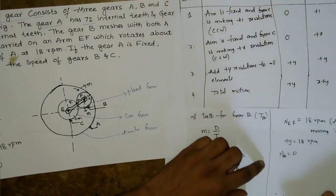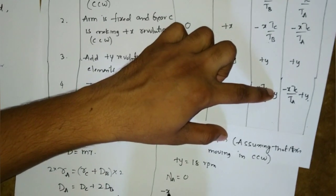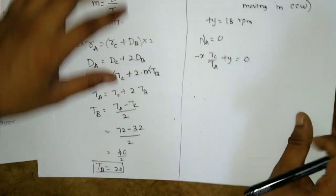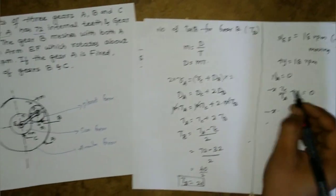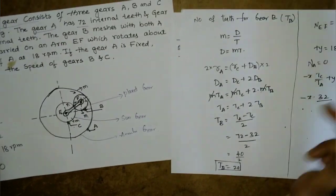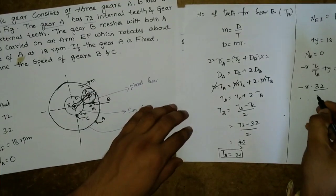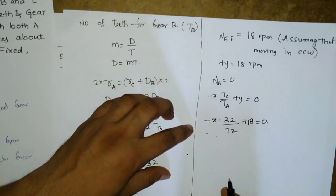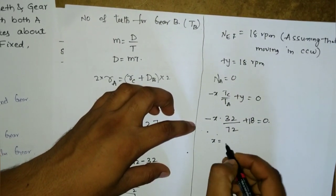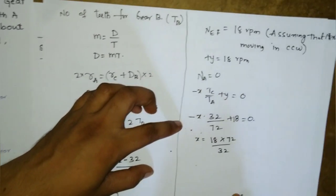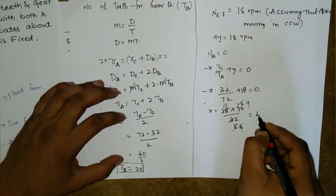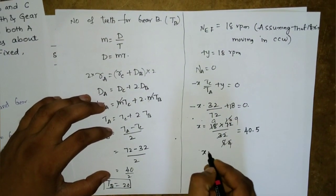Gear A is fixed, so NA = 0. From the table: −X·(TC/TA) + Y = 0. Substituting TC = 32, TA = 72, Y = 18: −X·(32/72) + 18 = 0. Solving: X = 18 × 72/32 = 40.5.